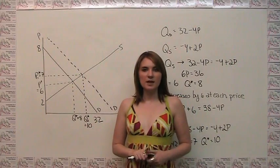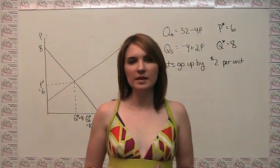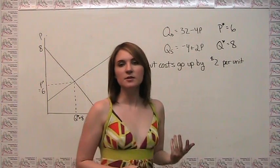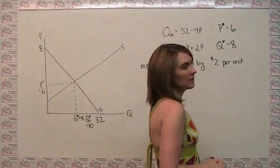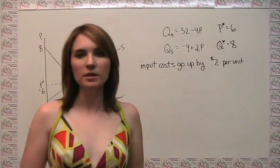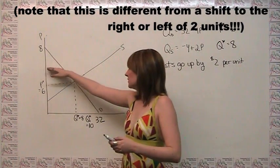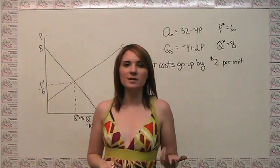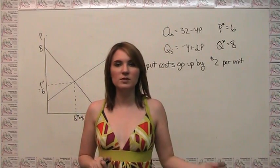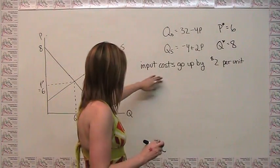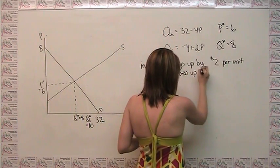This quantitative example is entirely consistent with what we saw when discussing the issue qualitatively. As a second example, let's start with the same supply and demand curves and consider the effect of an input cost increase of $2 per unit. What this means is that if input costs increase by $2 a unit, our supply curve is essentially shifting up by $2, because producers now need $2 more to be willing to produce the same quantity as before. So when input costs go up by $2 per unit, our supply price goes up by 2.